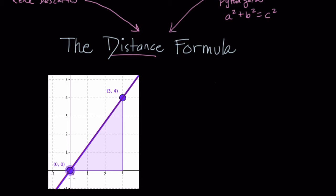Point A is the point (0, 0) — you can see that in different colors. Point A is (0, 0), and point B is right here, and that point is (3, 4). So just to summarize, we know that A equals (0, 0) and B equals (3, 4).